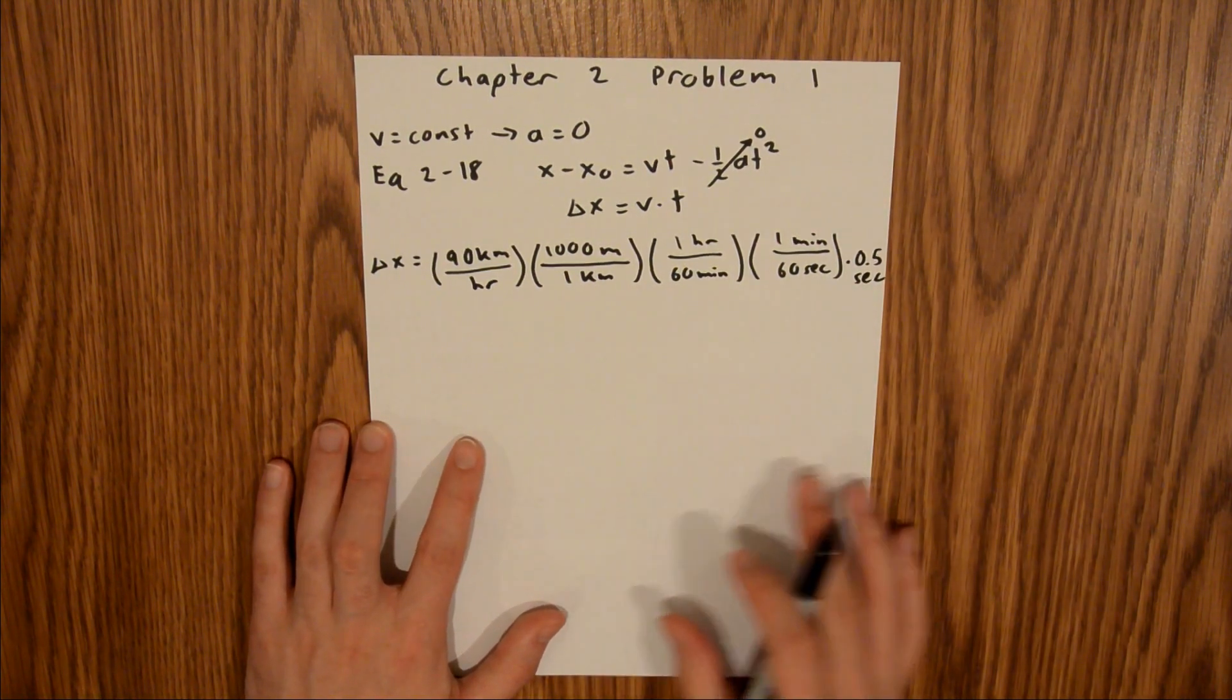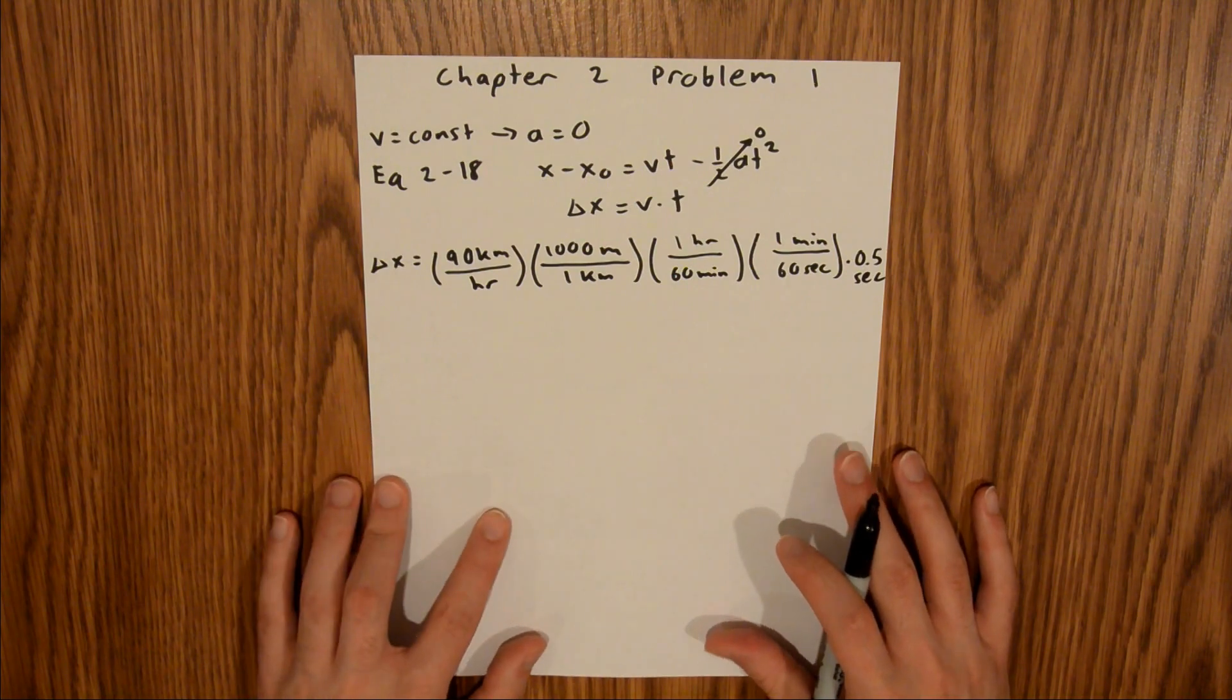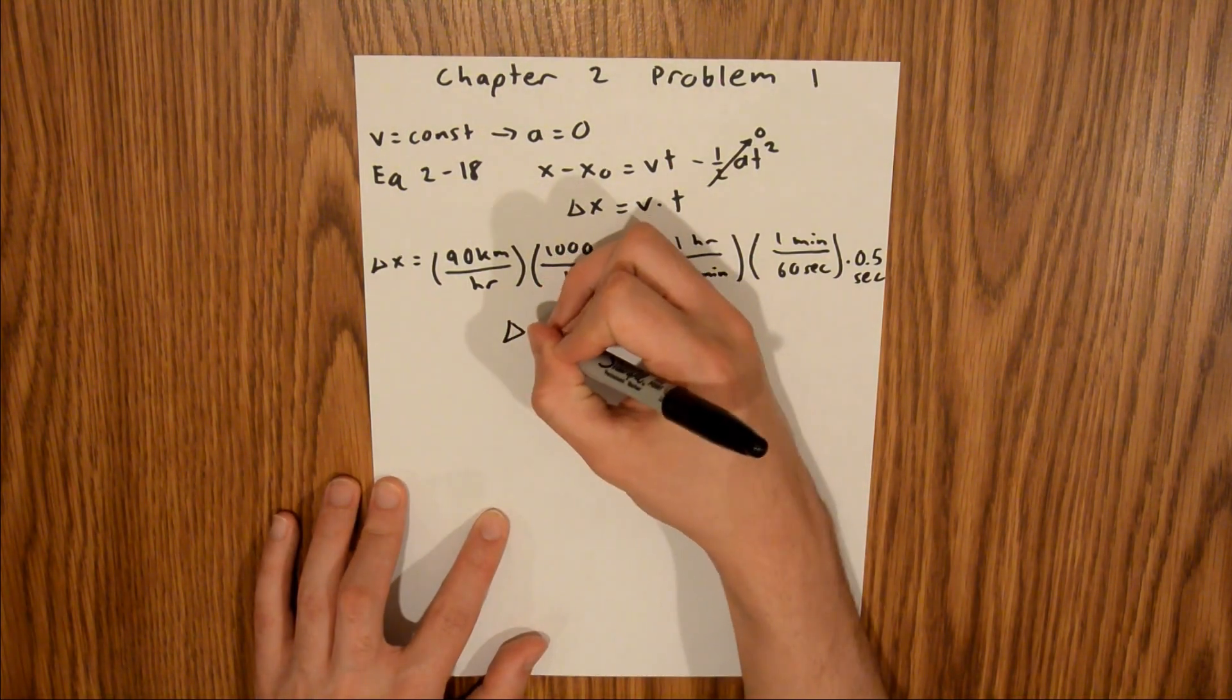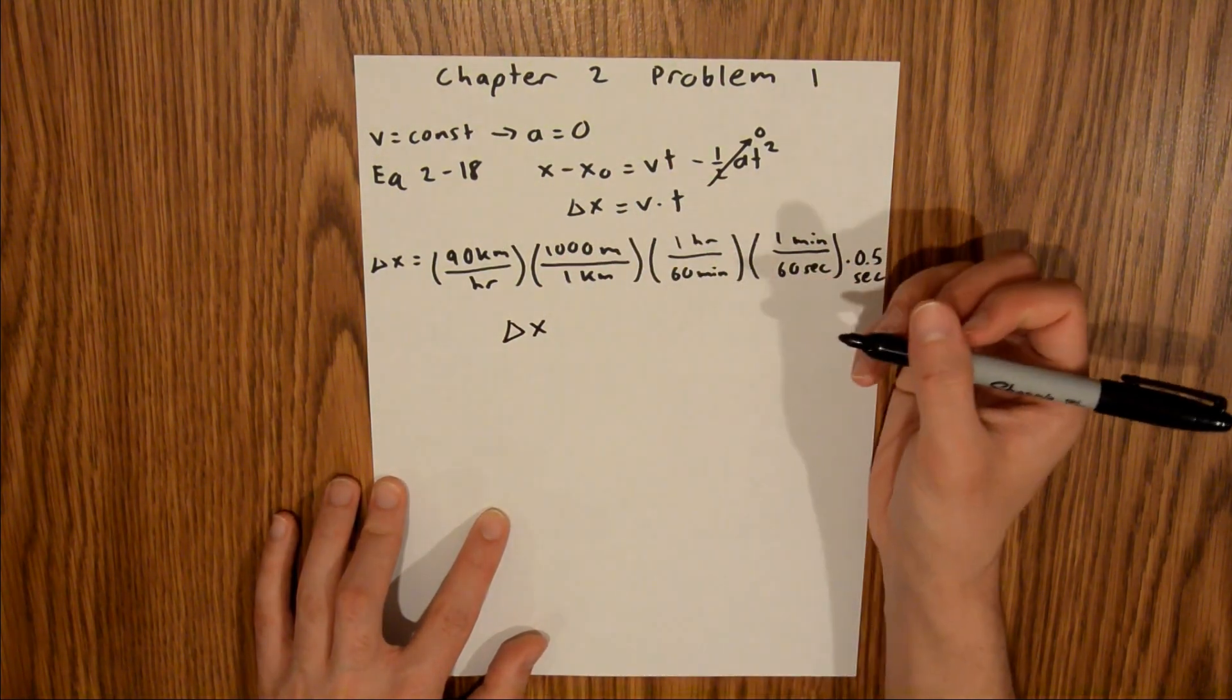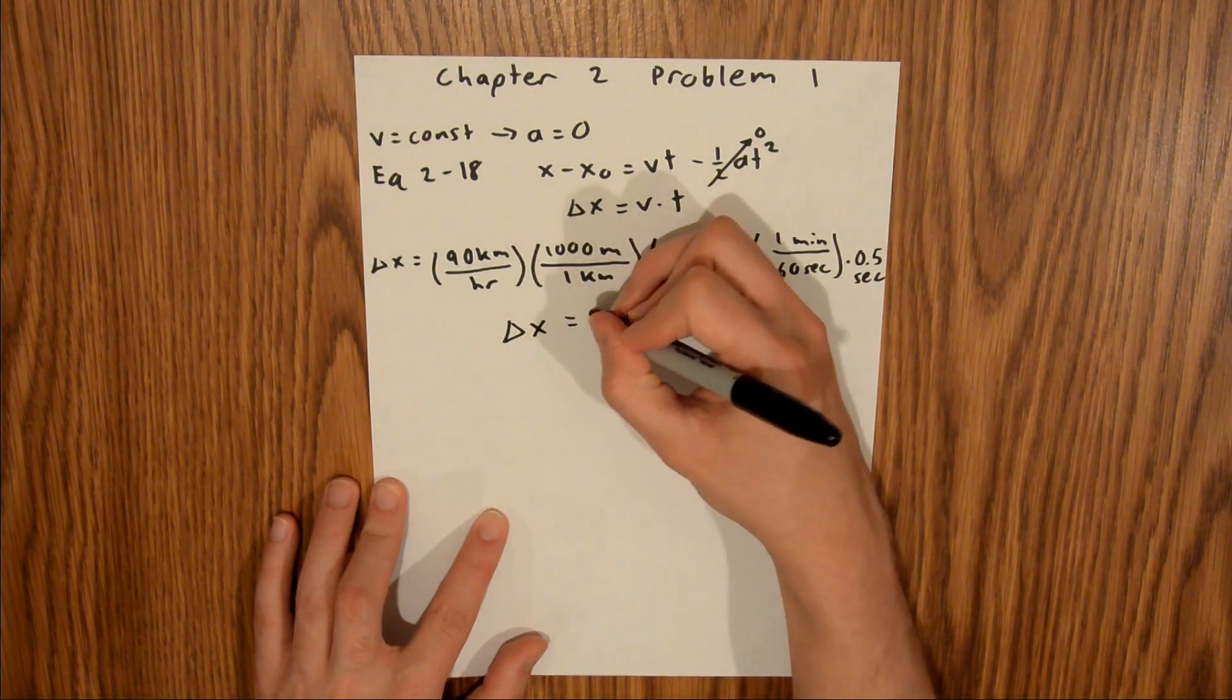And if you plug all of that into your calculator, you will find that the displacement that you move while you're shutting your eyes is equal to 13 meters.